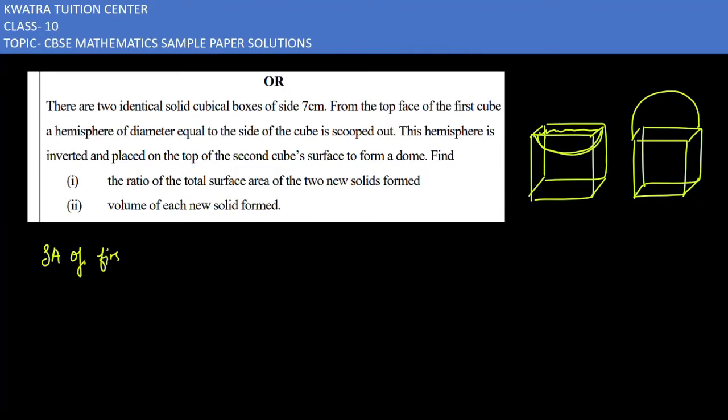You have to take the cube one. And then what will it be? It would be this part of the hemisphere, which is 2πr² and minus what will we do in it? πr². Because this part will already come into consideration. Let me tell you once again, you will understand the first solid surface area.